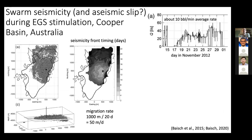Here is an EGS project in the Cooper Basin in Australia — a stimulation treatment showing injection rate versus time over a couple of weeks, with peak injection rates around 10 barrels per minute, injecting into a single sub-horizontal low-angle thrust fault. Seismicity spreads out from the injector; timing shown in days with lighter colors being earlier. Going about one kilometer in about 20 days gives a migration rate of about 50 meters per day, consistent with other examples.